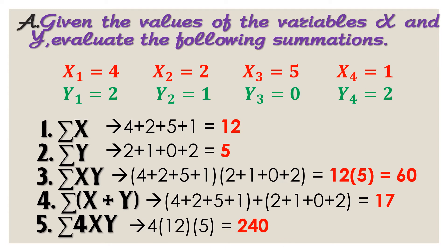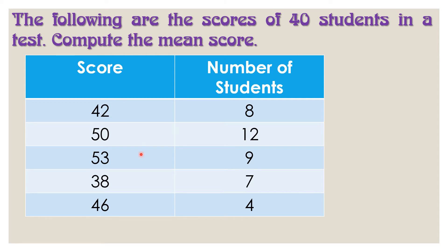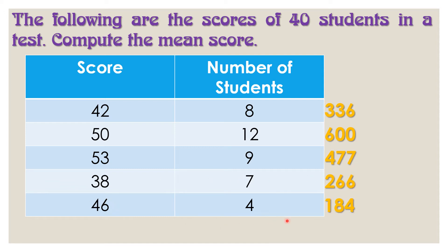I hope you get the process on how to get the summation. Now, we have here the scores of 40 students in the test as shown in the table. Our task here is to compute the mean score. We have the score in the first column and the number of students on the second column. First, multiply the score to the number of students who got that score. We have 42 times 8 that is 336, 50 times 12 that is 600, 53 times 9 that is 477, 38 times 7 that is 266, and lastly 46 times 4 that is 184. Next, add these values to come up with the total row score. Upon adding, we have 1863.